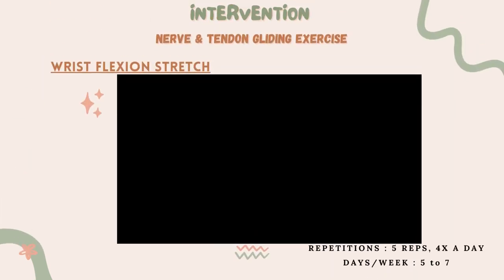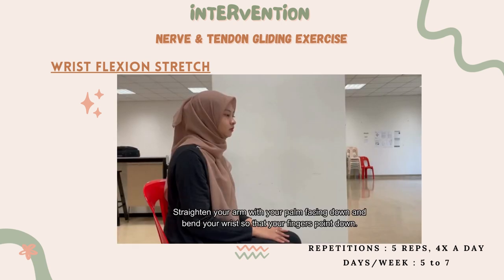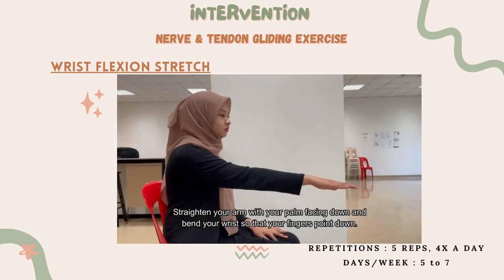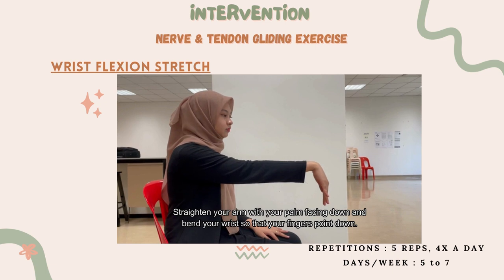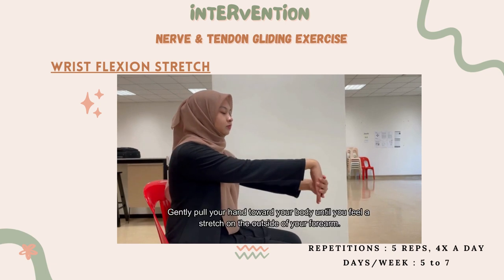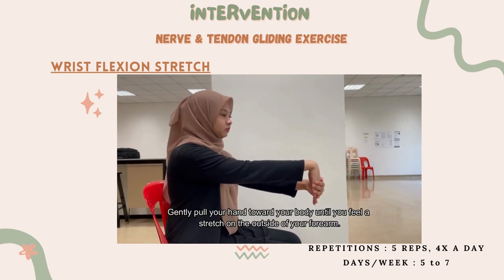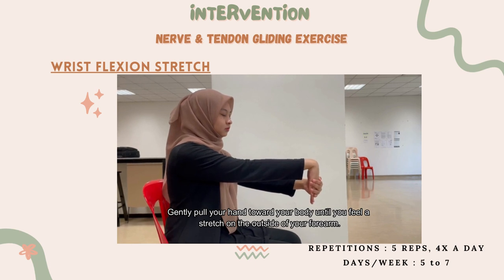The second step is the wrist flexion stretch. Straighten your arm with your palm facing down and bend your wrist so that your fingers point down. Gently pull your hand towards your body until you feel a stretch on the outside of your forearm.